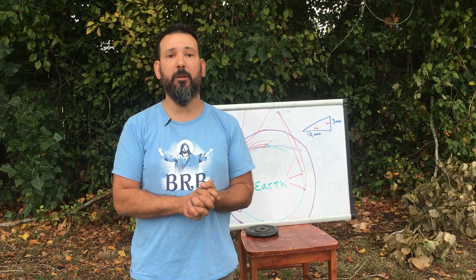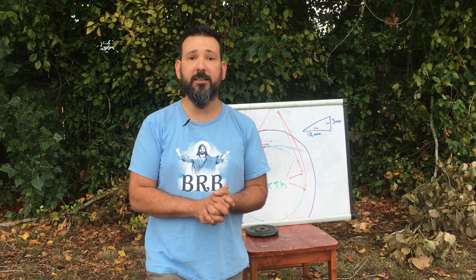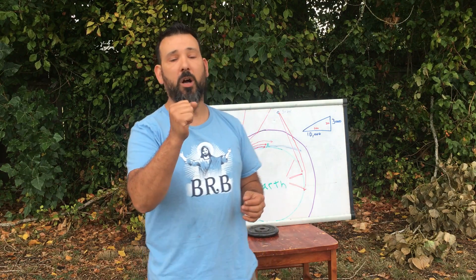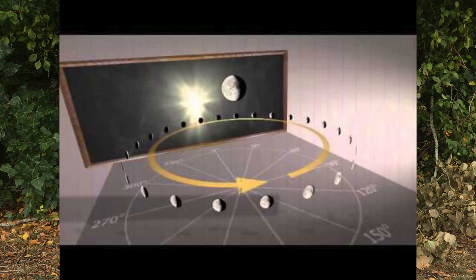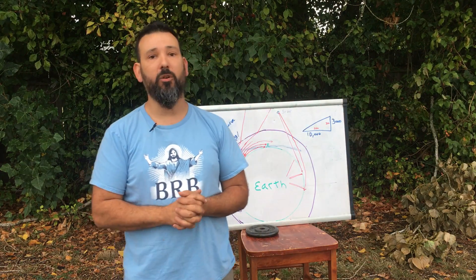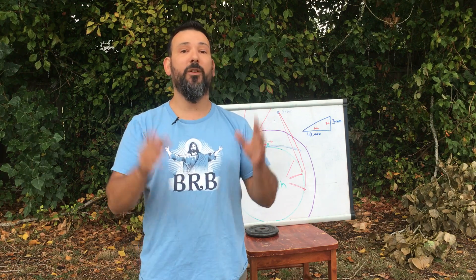I want to spend a couple of minutes and talk about the moon. A huge argument against the globe is that the moon cycle doesn't match up to what we see — this isn't true. On the flat earth model the Sun is here and the moon goes around like this. On the globe model it goes around like this too — it's the same motion. The Sun is just closer or farther away, so they're identical. You should see them the same way, except for the 24-hour moon cycle.